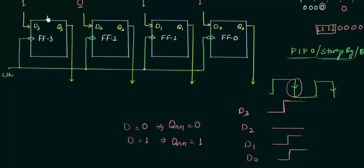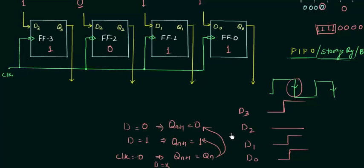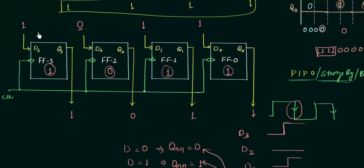So D3 is 1, so the data stored in that flip flop is 1. Similarly we have 0, 1, and 1 for the other flip flops. Now simply make the clock equal to 0, and whatever be the value of D is don't-care - we have Qn+1 equal to Qn, the stored value. The previous state is 1 for flip flop 3, 0 for flip flop 2, 1 for flip flop 1, and 1 for flip flop 0. Now you have stored the data - take it out in parallel: Q3 is 1, Q2 is 0, Q1 is 1, Q0 is 1. We wanted to store 1, 0, 1, 1 and we stored it without any problem, with 1, 0, 1, 1 as our output.